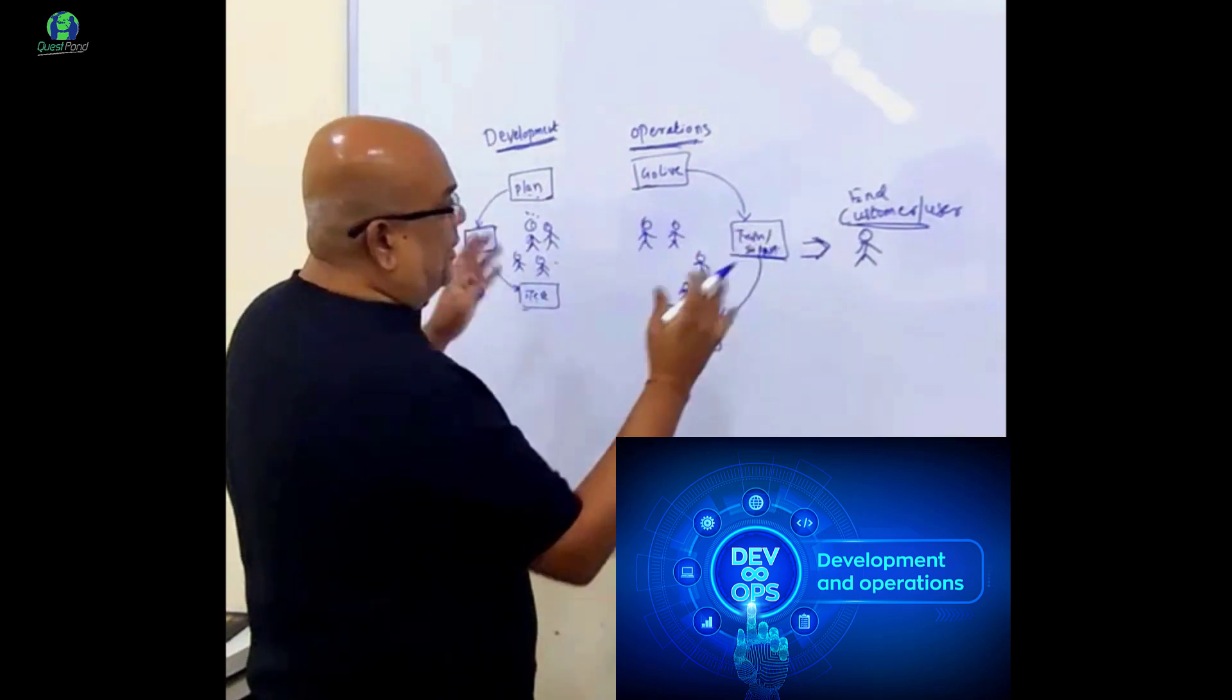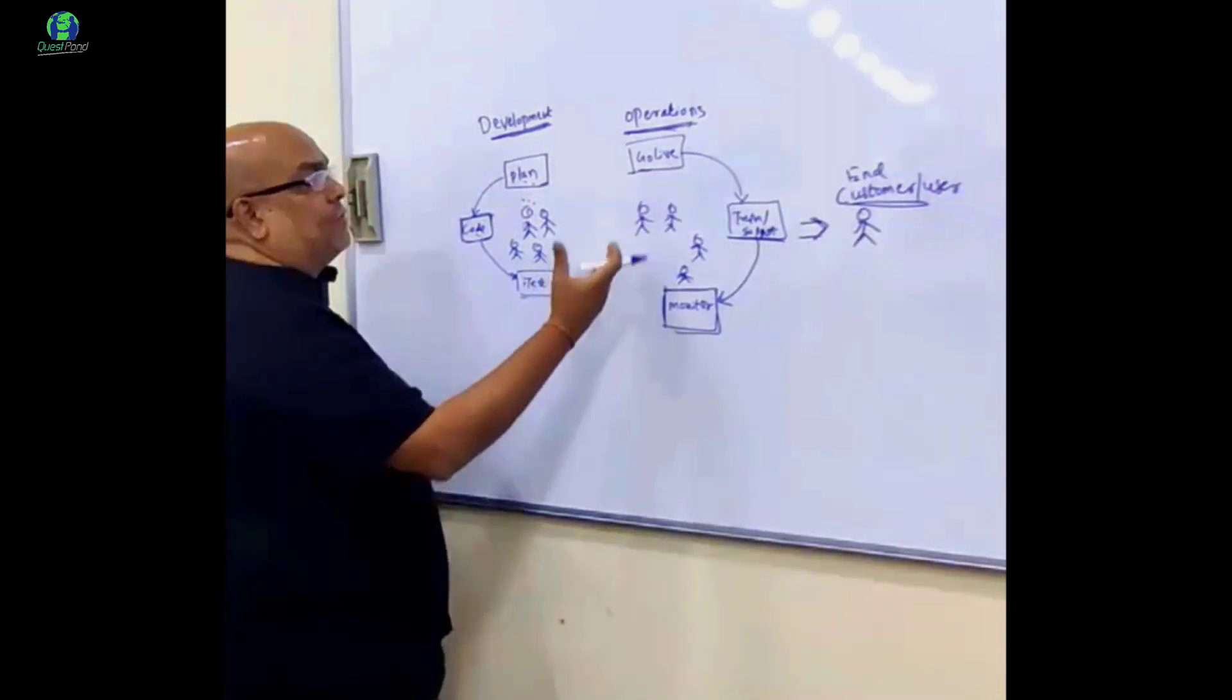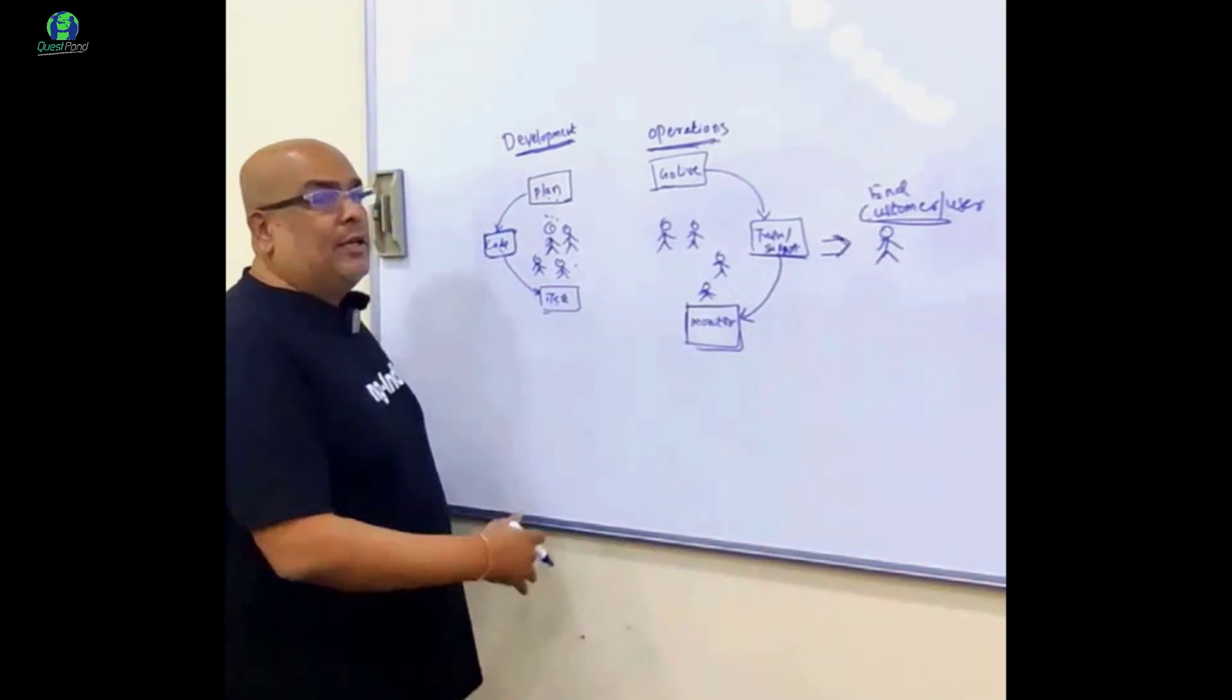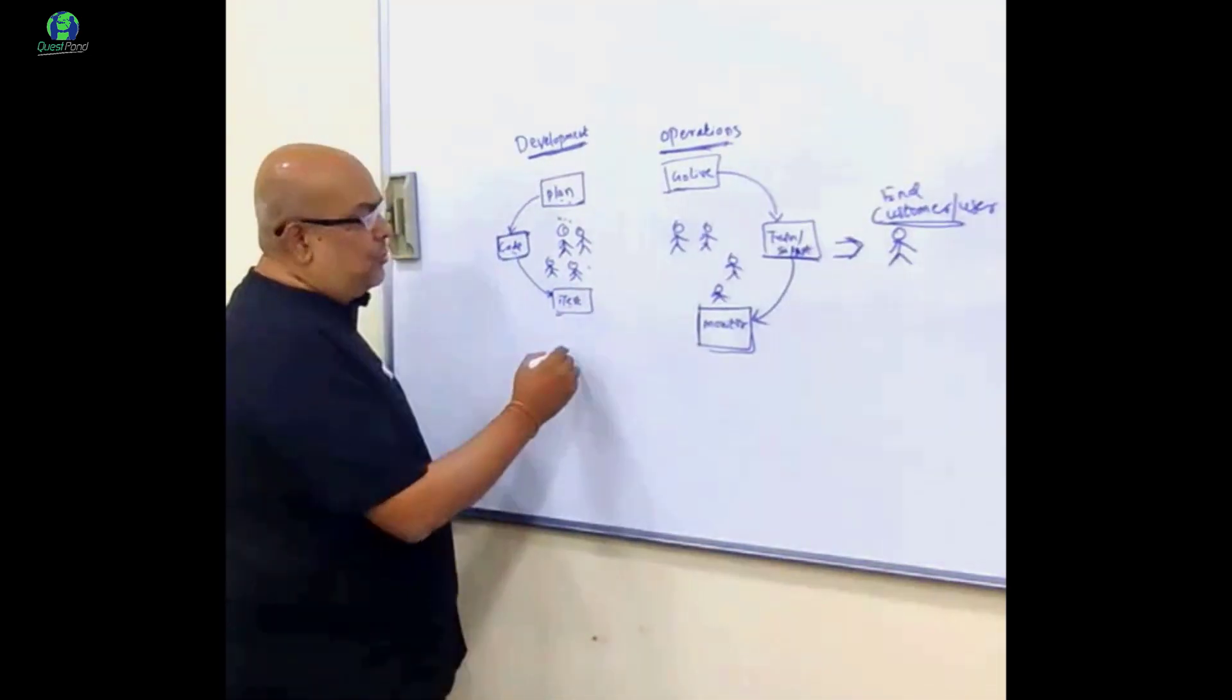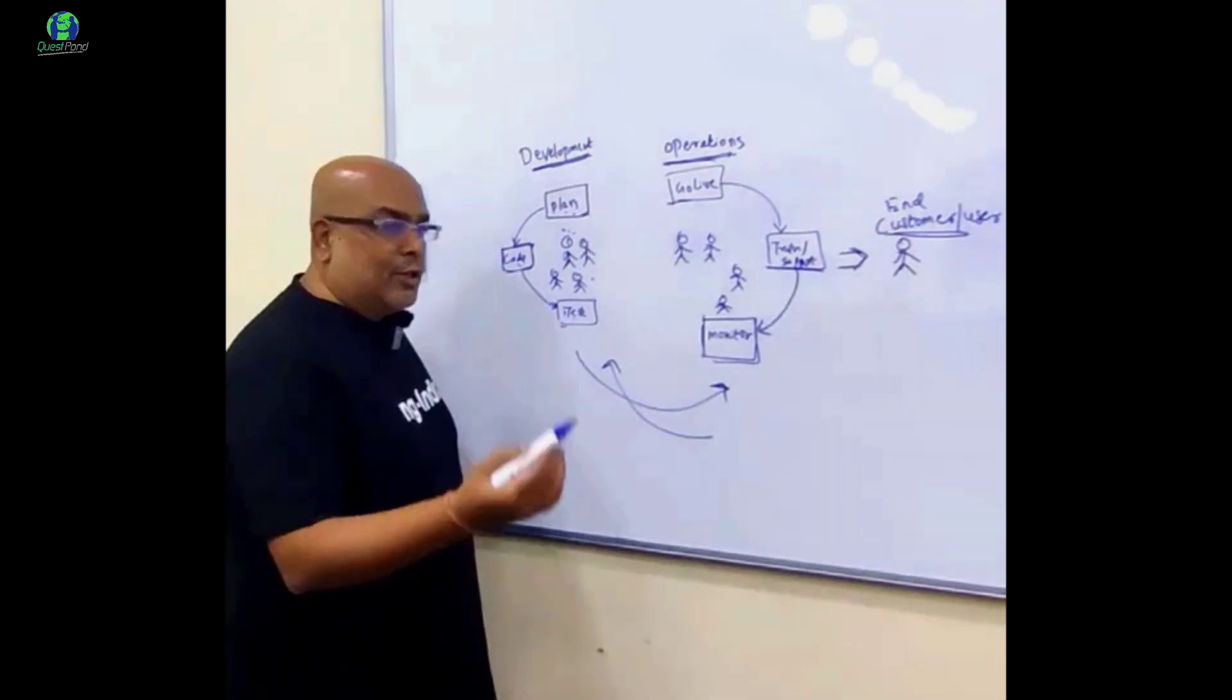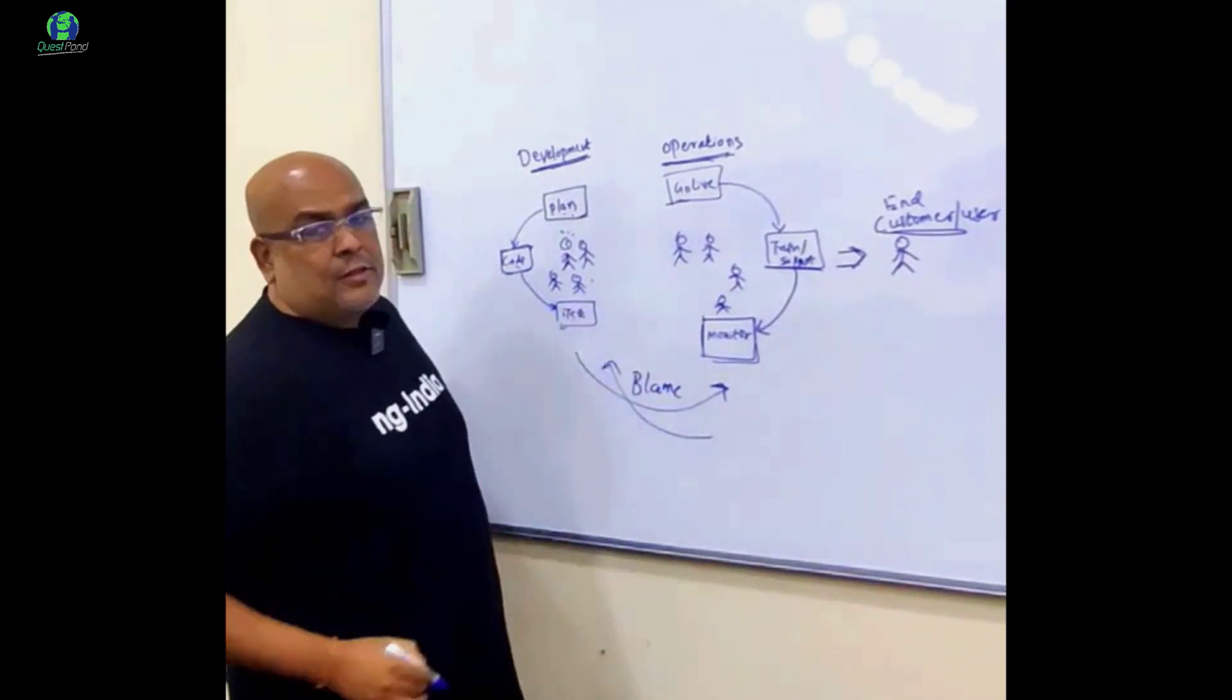Now, these are two different teams out there. And what happens in reality is that a blame game starts. For example, if something goes wrong in go live, the operation team starts blaming the development team saying that you did not code properly, you did not tell how to do the build. And the development team also starts blaming the operation team and says that you don't know how to go live, you don't know the technology or you did not support things well. So a blame game starts.